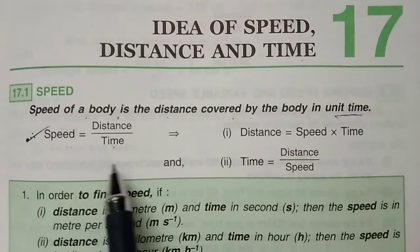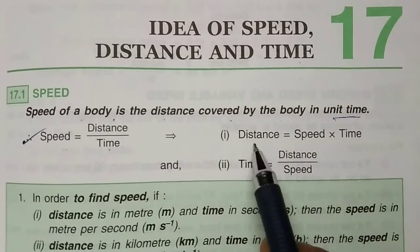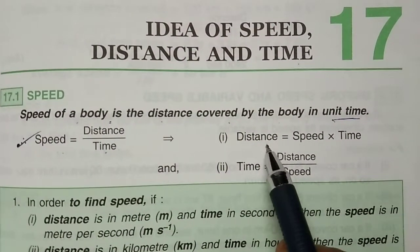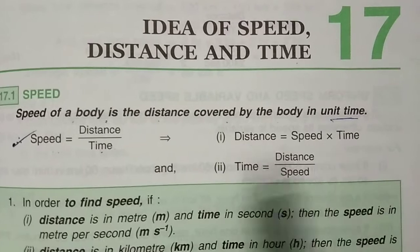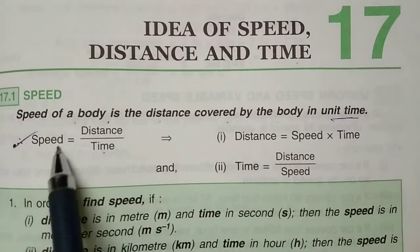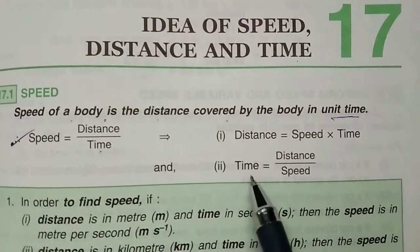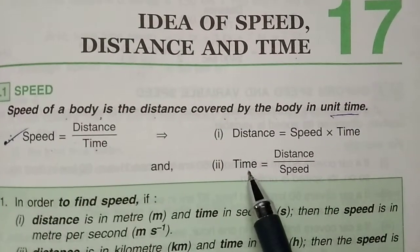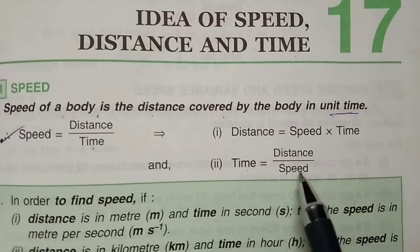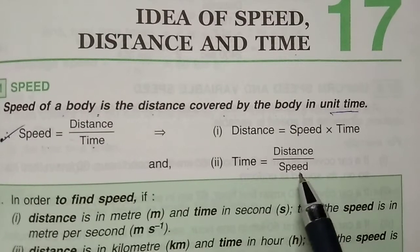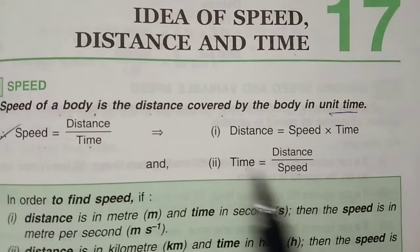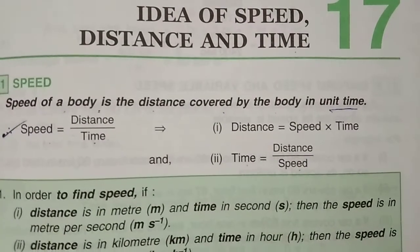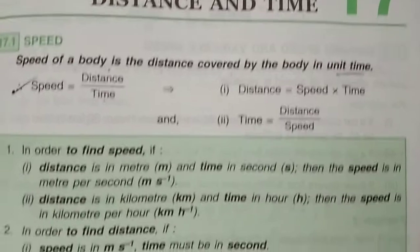From this formula, we can find the formula for distance: distance equals speed multiplied by time. And if we have to calculate time, it is distance divided by speed. These three formulas you have to learn by heart. Then you can do all the questions in this section.